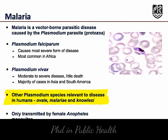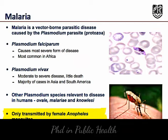Other Plasmodium species relevant to disease in humans include Plasmodium ovale, malariae, and knowlesi. The parasite is only transmitted by the female Anopheles mosquito.